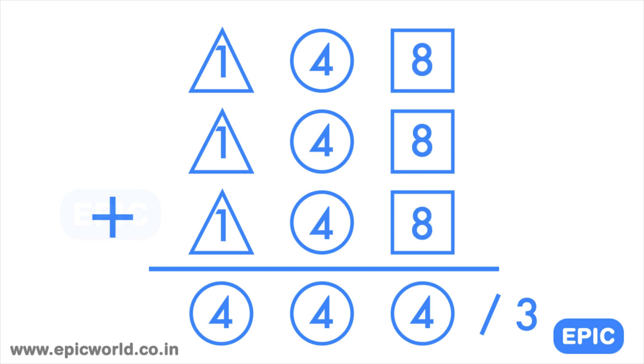If you check more, you will find that only four four four satisfies the equation perfectly. Hence triangle will be one, circle will be four and the square will be eight.